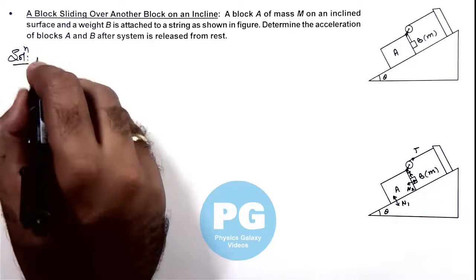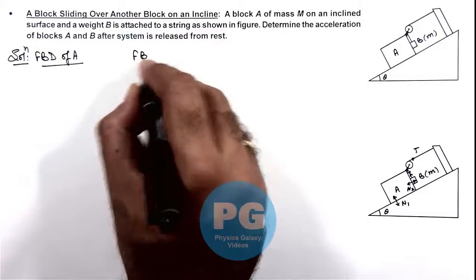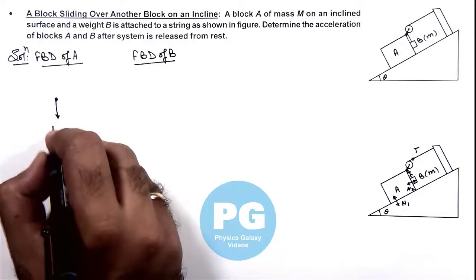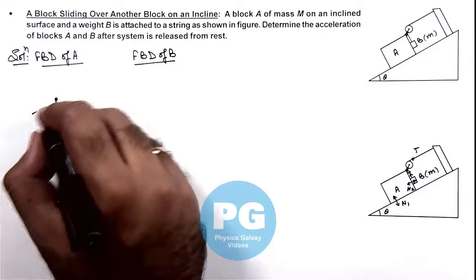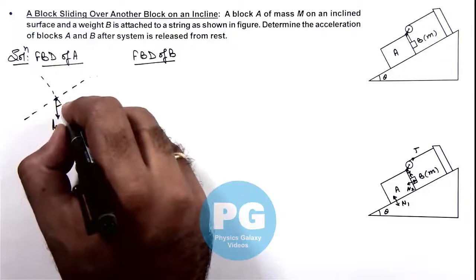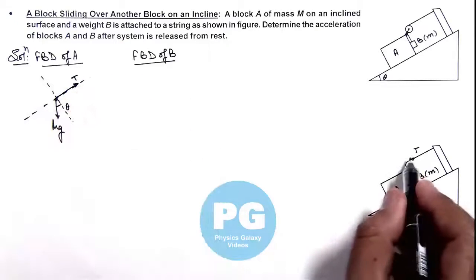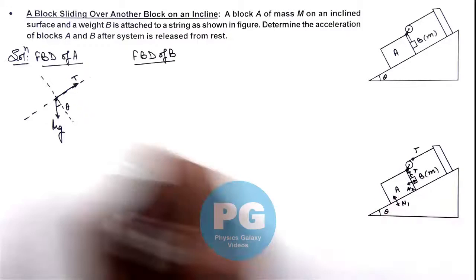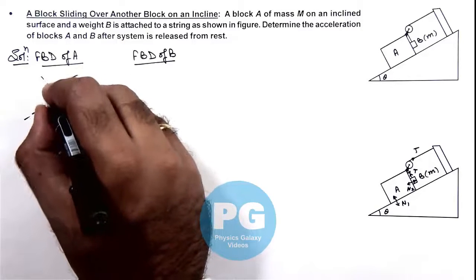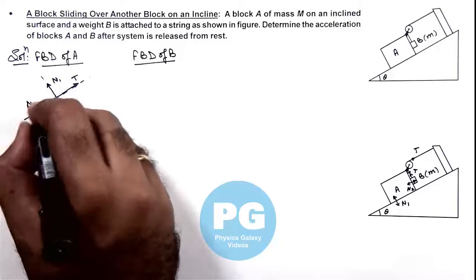If we draw the free body diagram of A, block A will experience its weight Mg in the downward direction. Taking the reference line along and perpendicular to the incline, with angle theta, one tension T acts along the surface, another tension T acts normal to the incline, normal reaction N1 acts on the block, and normal reaction N2 due to block B acts in that direction.